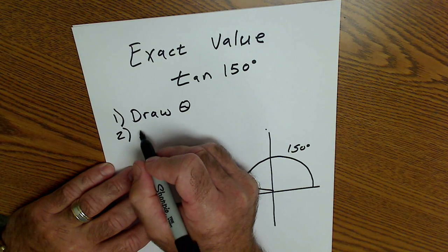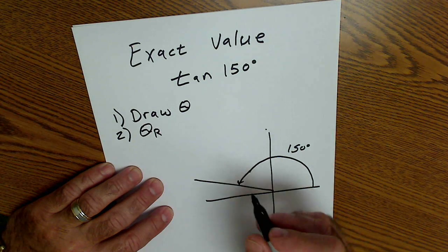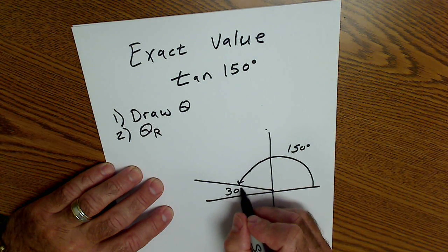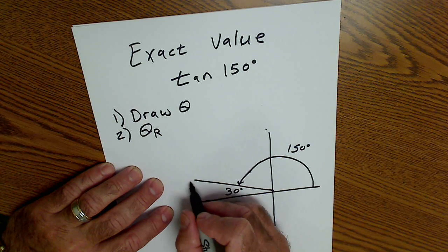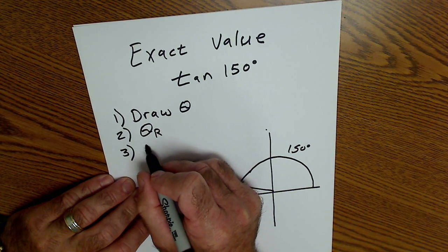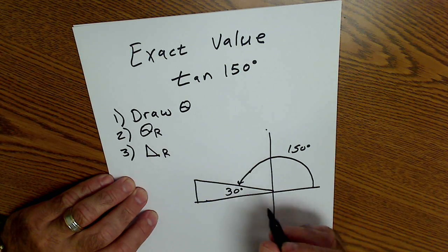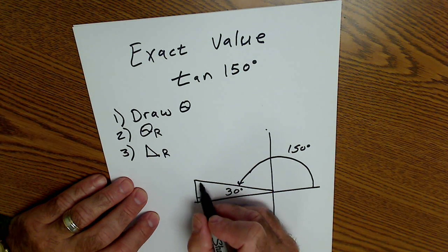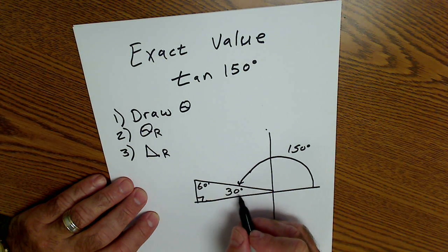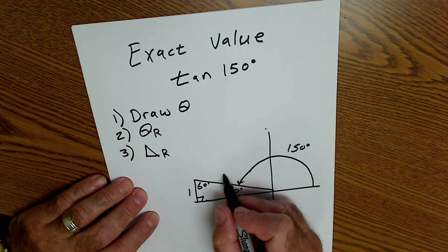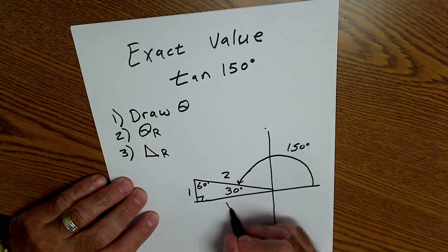Step two, draw the reference angle, 30 degrees. Step three, create the reference triangle. It's a 30-60-90. Side opposite 30 is one. Hypotenuse is two. Side opposite 60 is root three.